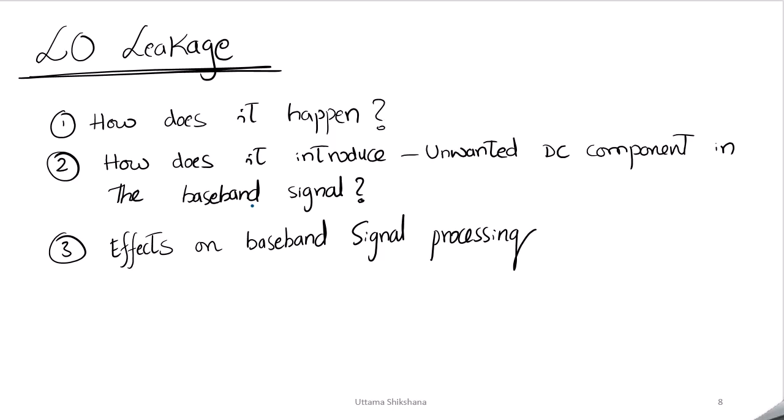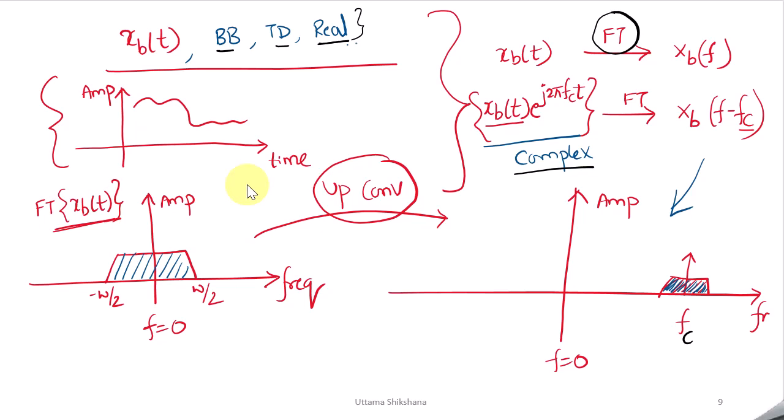In the previous video I had missed some important details, so I will cover those along with the basics and then move to the crux. In the previous video, x_p(t) is the baseband signal I had considered. For the sake of simplicity I had considered it as real. This is the time domain and frequency domain spectrum I had mentioned.